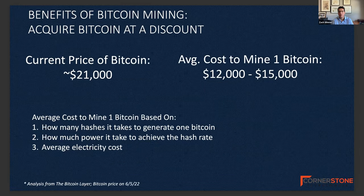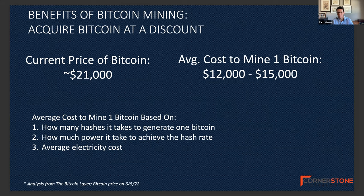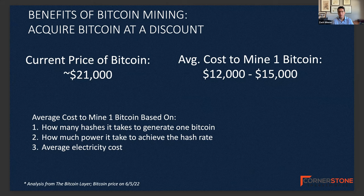One of the big benefits of acquiring Bitcoin through mining is you're getting it at a discount. The average cost to mine one Bitcoin in the industry is somewhere between $12,000 to $15,000. It varies depending on your variables, but that's roughly the range. If you compare that to the current price — today it's trading at around $24,000 — you can see that acquiring Bitcoin through mining is getting Bitcoin at a large discount.